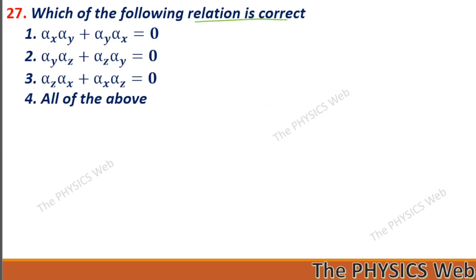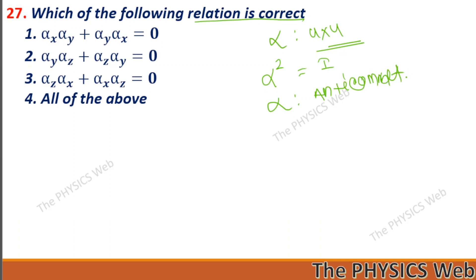Next: which of the following relations is correct? Remember, alpha matrices are 4×4 matrices. The square of any alpha matrix gives you the identity matrix. Alpha matrices always anticommute — alpha-x and alpha-y anticommute, alpha-y and alpha-z anticommute, alpha-z and alpha-x anticommute. Similarly, alpha and beta in pairs also anticommute. So, all of the above relations are correct — four is your correct option.